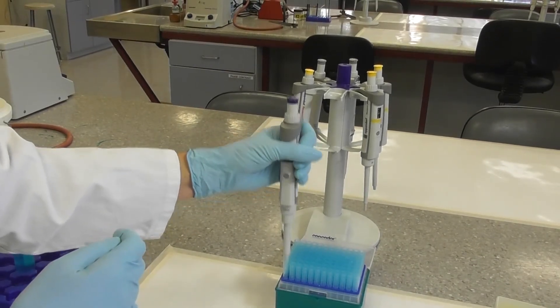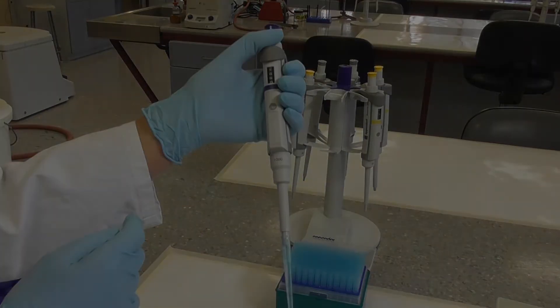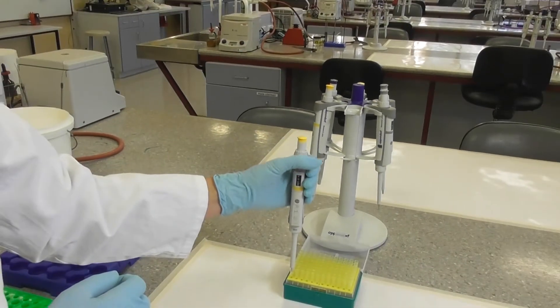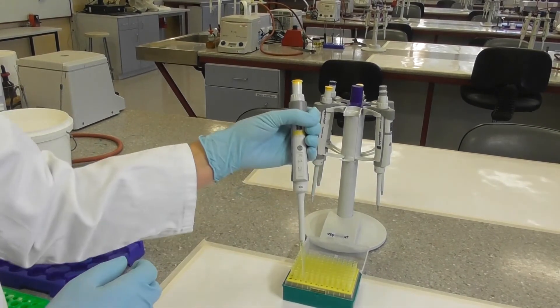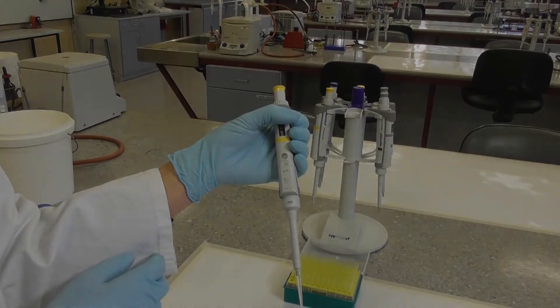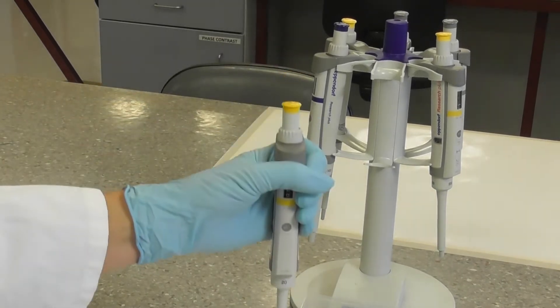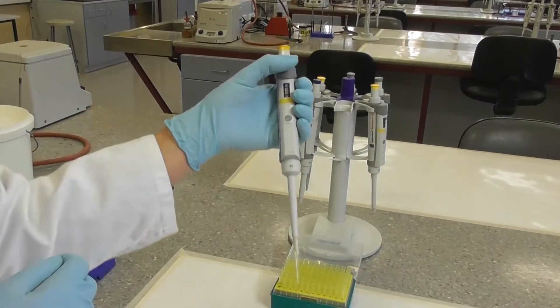The 1000 microliter pipette uses the large boxed tips. The 200 microliter pipette uses the medium sized boxed tips. The 20 microliter pipette also uses the medium boxed sized tips.